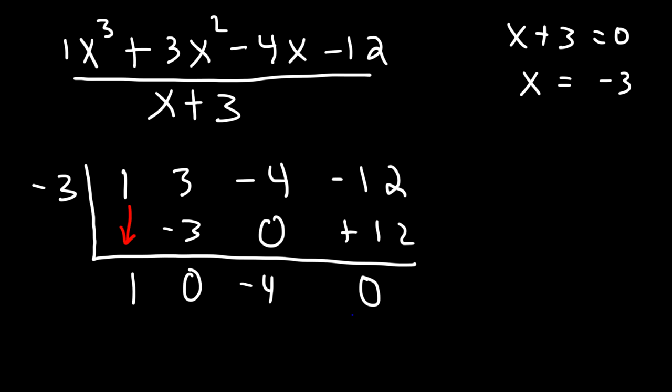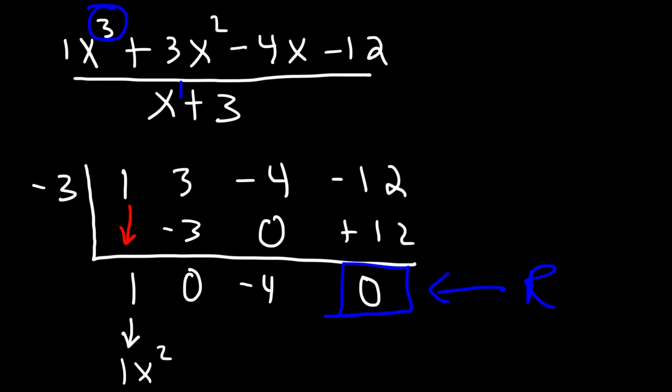So the last number that you get here is the remainder. So we have a remainder of 0. So what is our answer? If you divide x cubed by x, you're going to get x squared. So this is the coefficient for x squared. It's 1x squared plus, this is the coefficient for x, 0x, and then minus 4. Now we could ignore 0x. So therefore the answer is going to be x squared minus 4. And so that's how you could use synthetic division on polynomials, if you wish to divide polynomials.